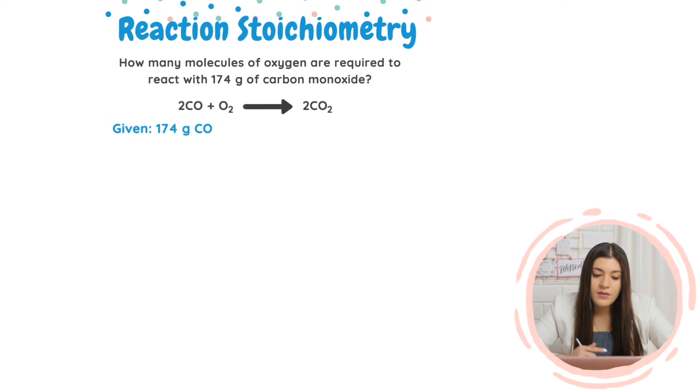So oxygen is always going to exist in pairs. So it's never just going to be O. It has to be O2. So then I know I'm finding molecules of O2. So right then and there, your given is going to act as your starting point, and your finding is going to act as where you end. Now we just have to figure out the chunks in between.